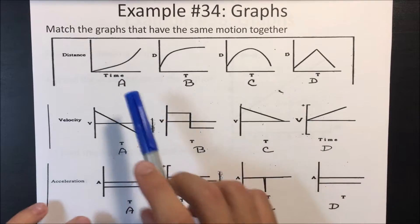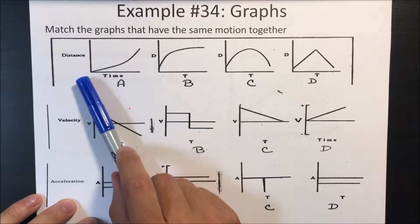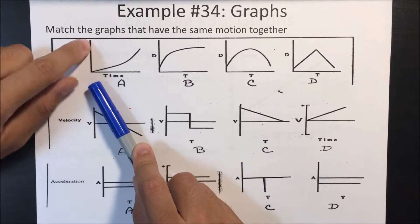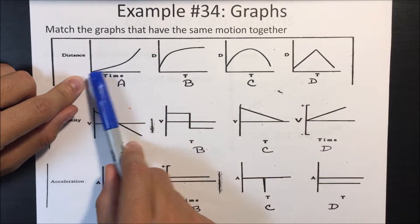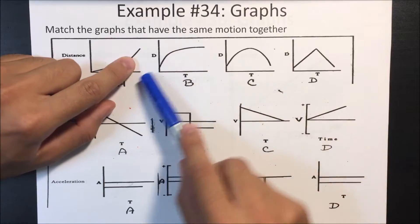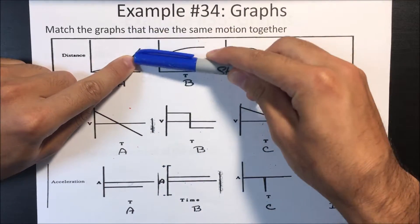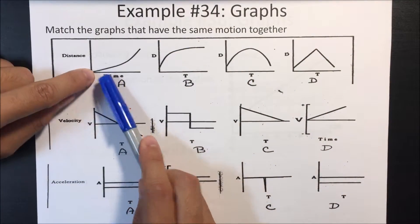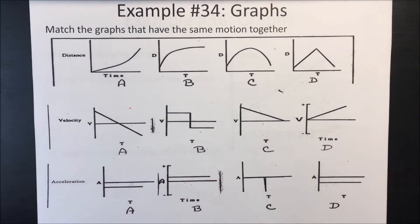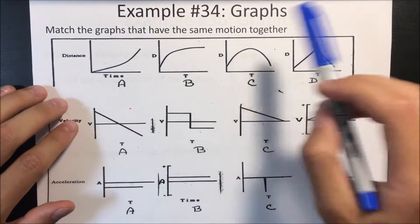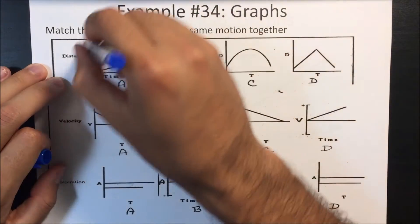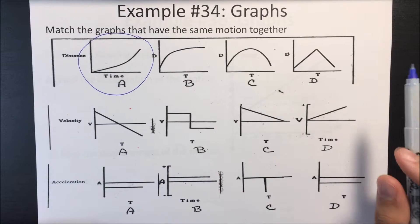Let's look at this first position versus time graph. What we see is as time goes on, it's going to be covering more and more ground dramatically. At the beginning it doesn't cover that much ground, but at the end, just with a little bit of time it covers a lot of ground. If you look from this time to this time, it only covers a little bit of ground. So it's covering more and more ground as time goes on, which means it's accelerating in the positive direction.